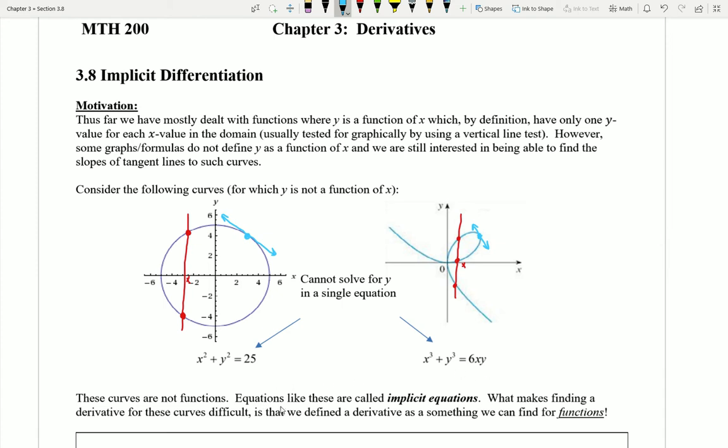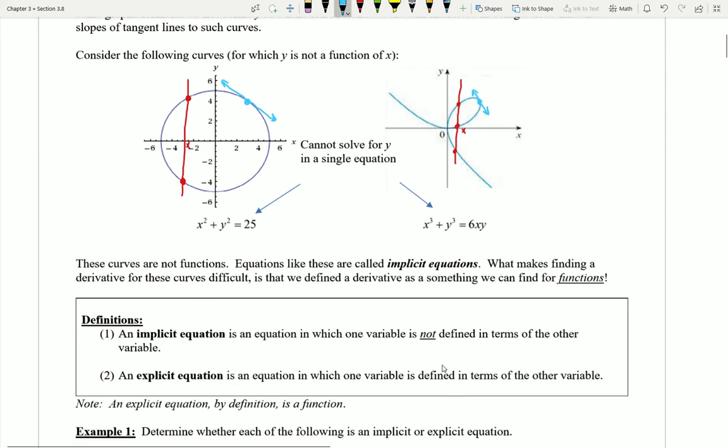These equations are typically what we call implicit equations. We'll define what implicit versus explicit equations are in the definitions here. An implicit equation is an equation in which one variable is not defined in terms of the other variable. Like these equations up here, I don't just have one variable equals a bunch of stuff with the other variable.